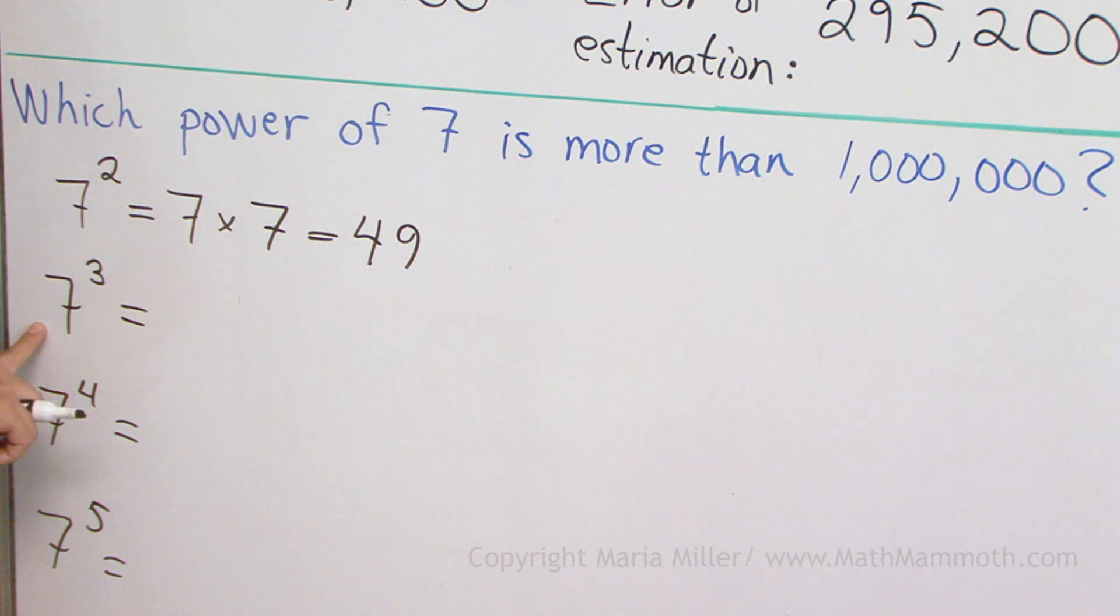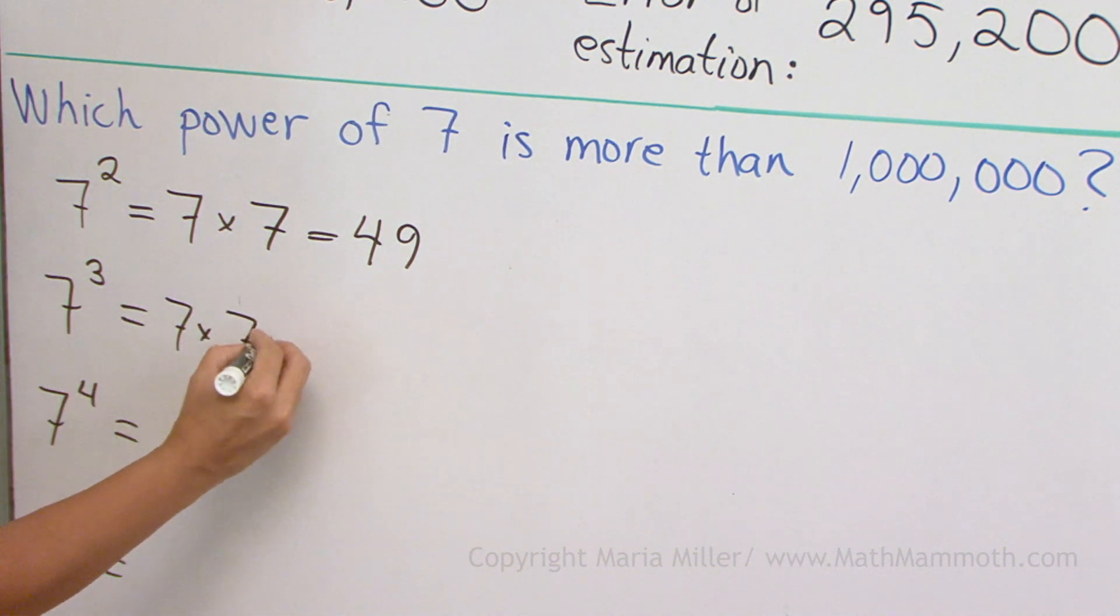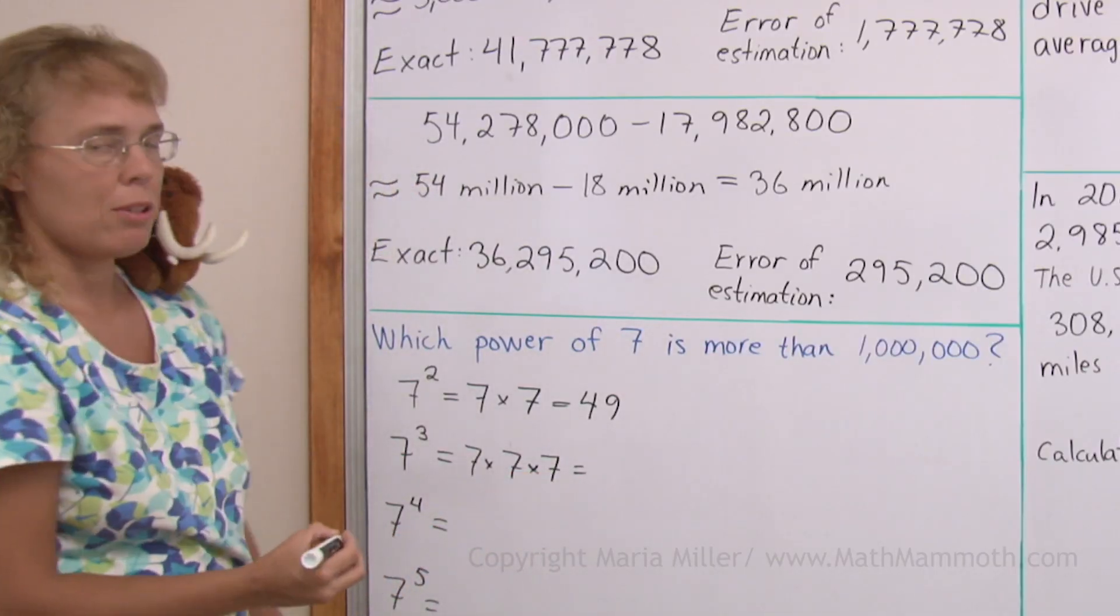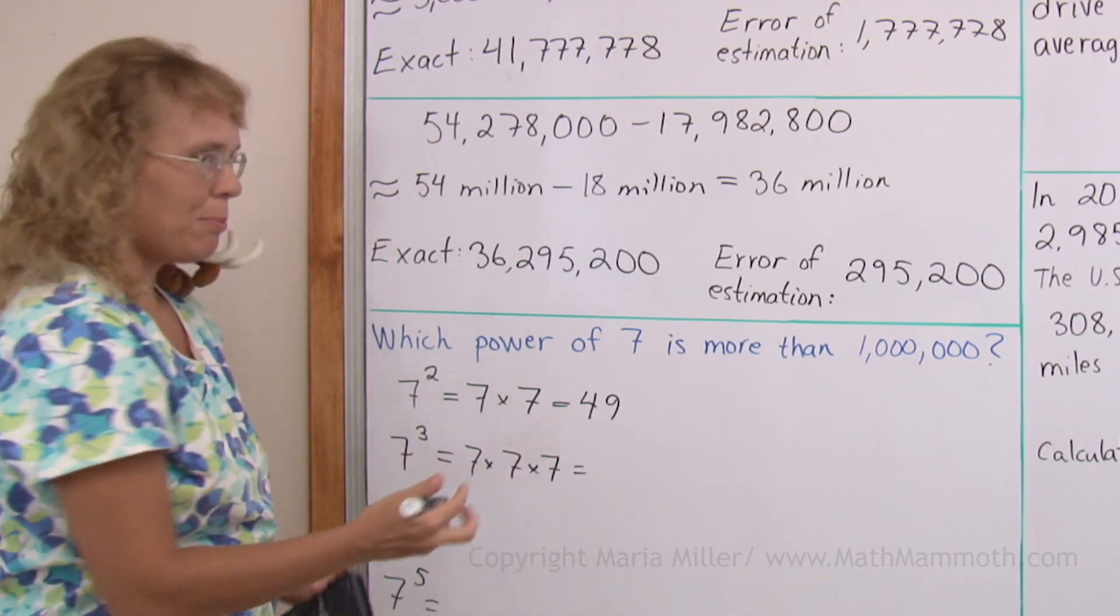This one means seven times seven times seven. Let's use the calculator to calculate these powers, where we multiply times seven repeatedly.